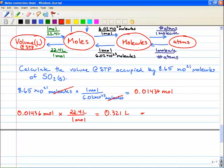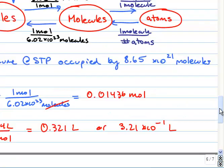Now we can also write this as 3.21 times 10 to the negative 1 liters. All right, have a good rest of the day.